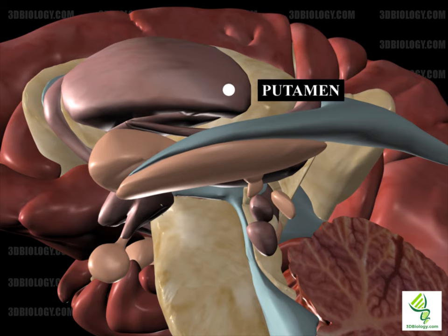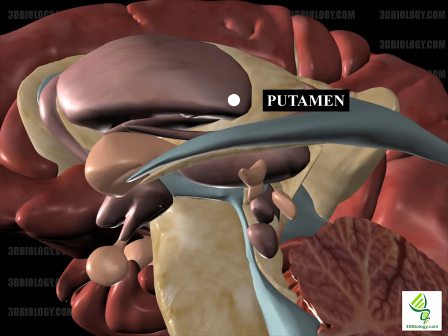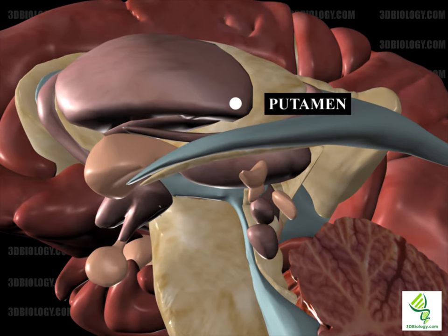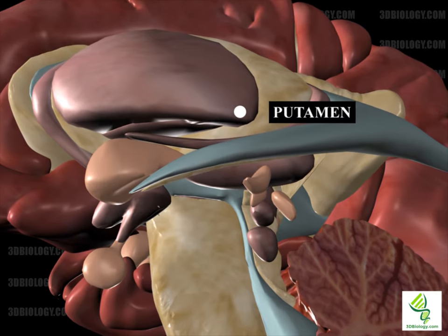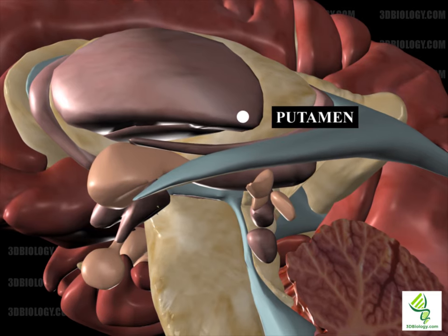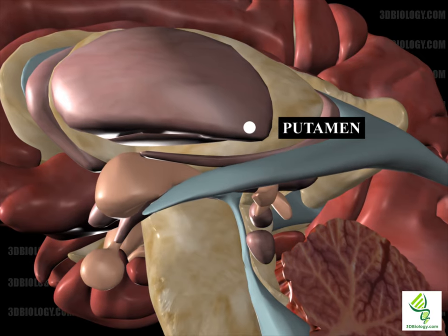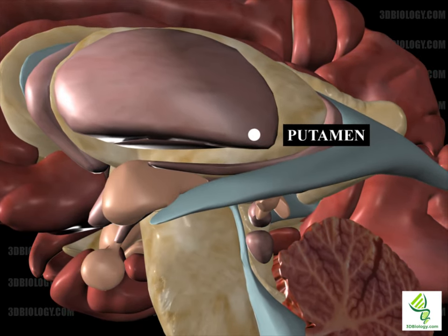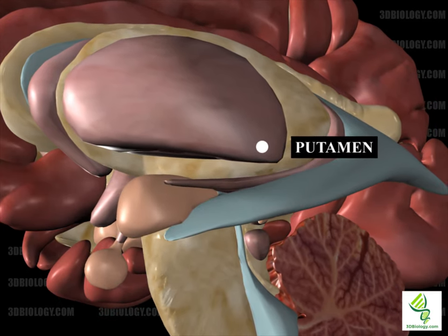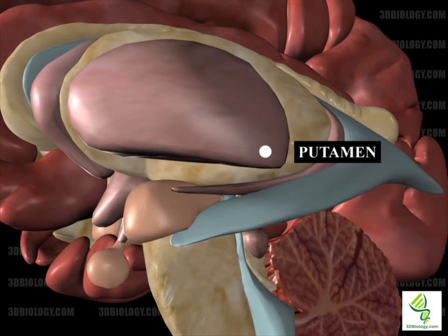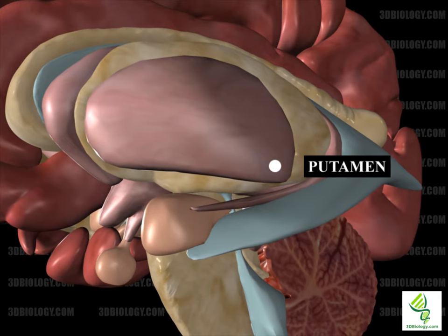The putamen is a round structure that is part of the basal ganglia. Together with the caudate nucleus, it forms the dorsal striatum. To the medial of it lies the globus pallidus. It functions in regulation of movement and is connected to the globus pallidus and substantia nigra. The putamen is affected in Parkinson's disease, where involuntary muscle movements occur. Together with the globus pallidus, it is known as the lentiform nucleus, as they appear lens-shaped.